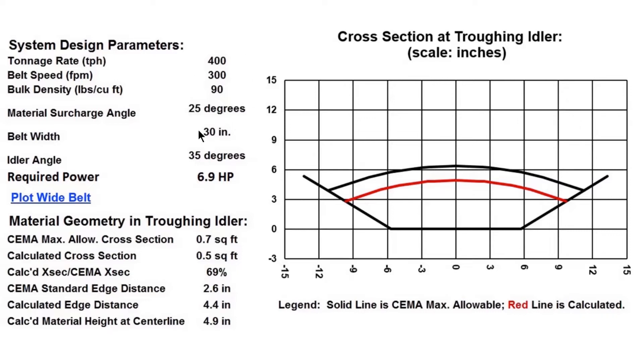I've also programmed in a material surcharge angle of 25 degrees. You can see that for these parameters, the program gives us a conveyor drive power requirement of 6.9 horsepower. The black line on the top of the cross section represents the CEMA maximum recommended cross section for the geometry given. The red curved line shows the upper limit of the design cross section.